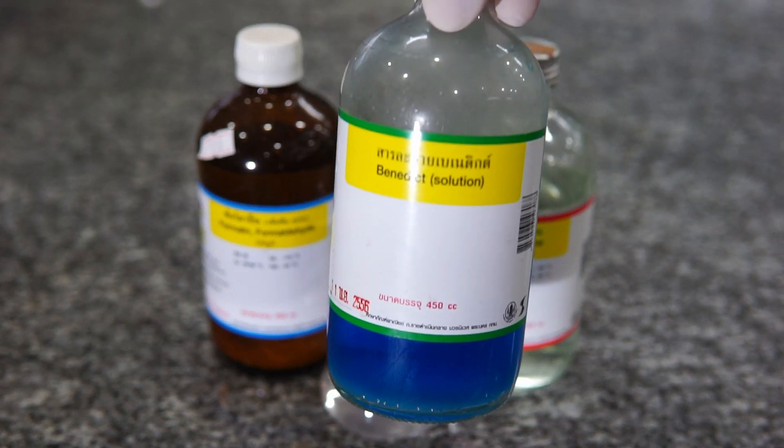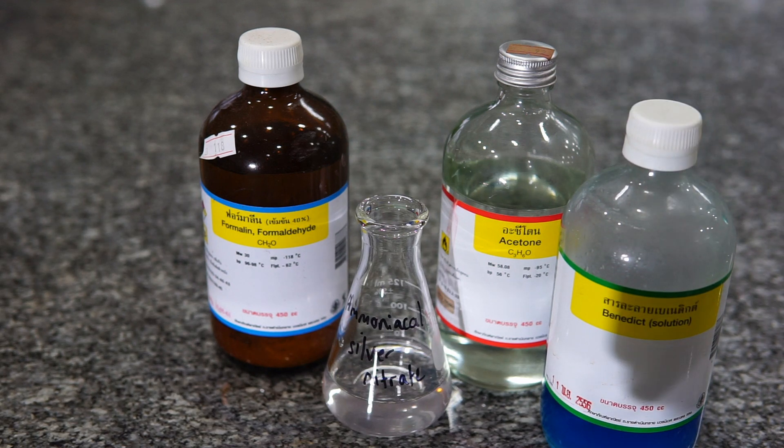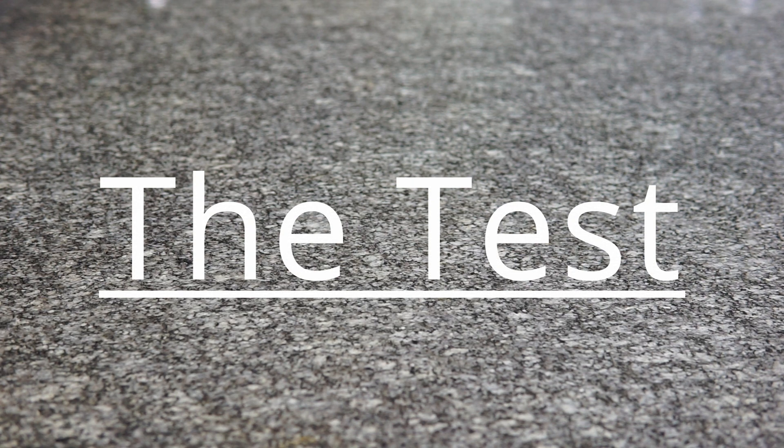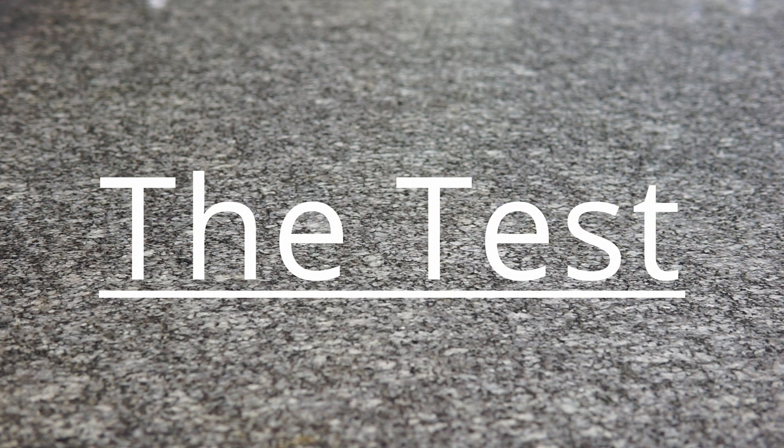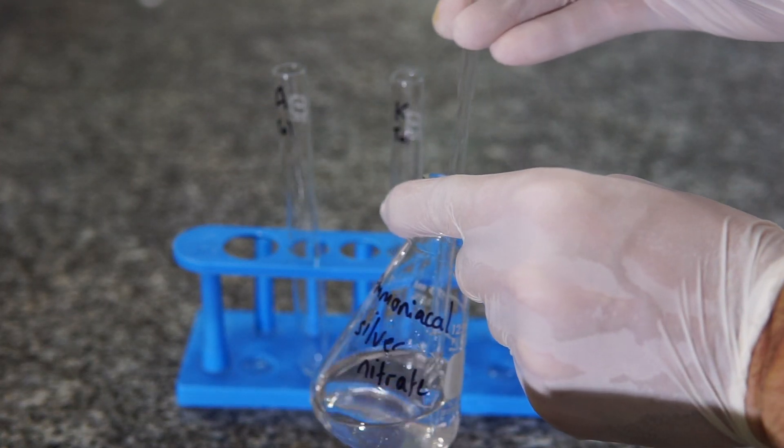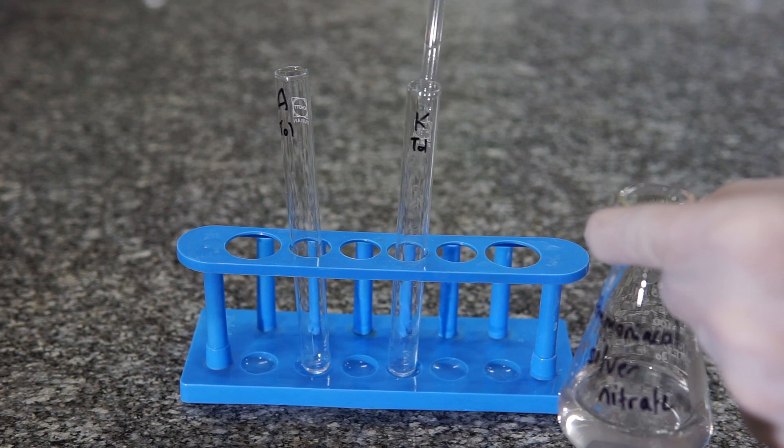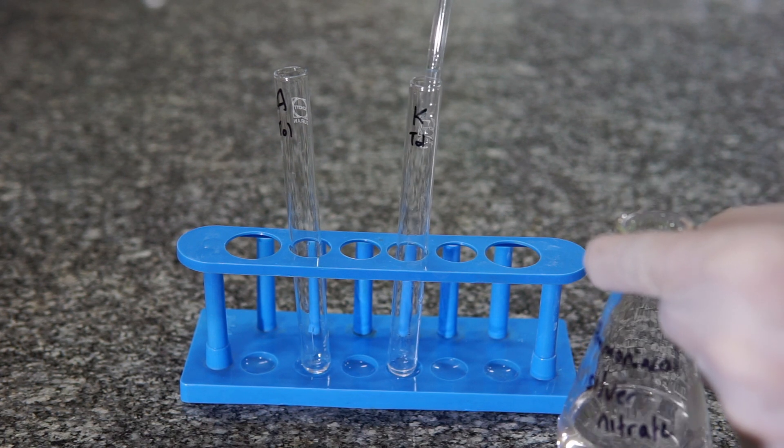As a comparison, we'll also do the Benedict's test as well. On to the test. I have two test tubes on the screen which I have labeled A for aldehyde and K for the ketone.